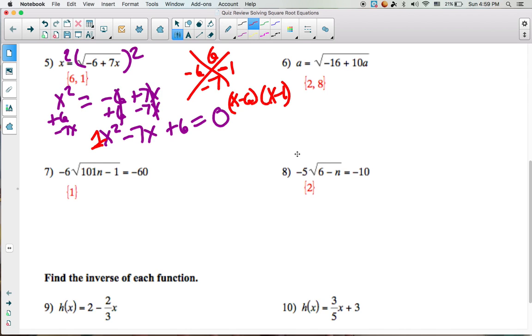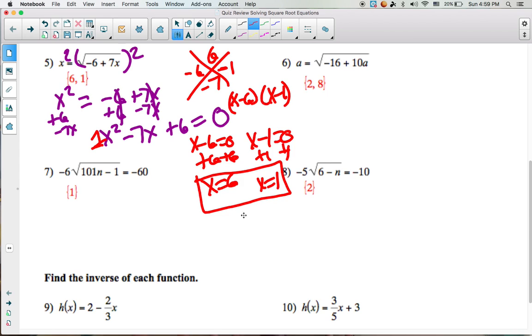We factor it, and then we need to solve. Take each of the factors individually, set them equal to 0, and solve for x. I'll add 6, which gives me x equals 6. I'll add 1 to each side, that gives me x equals 1. Our solution is 6 and 1, which is exactly what we should have got.